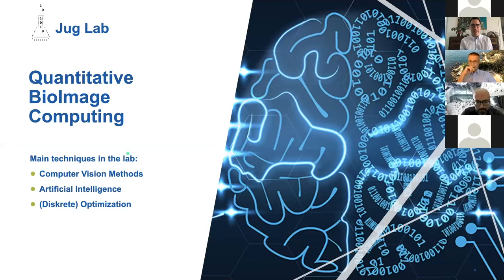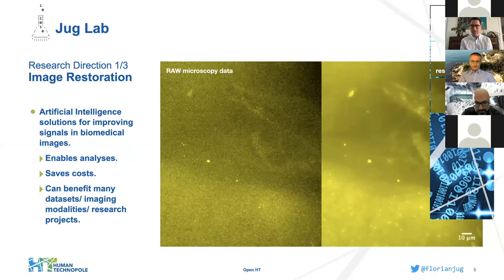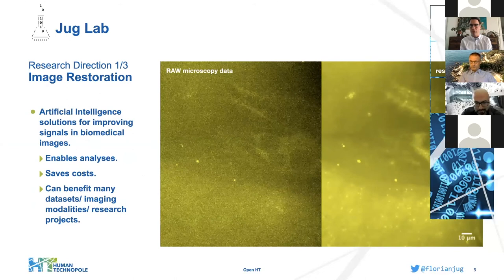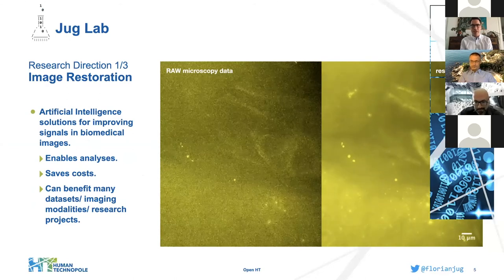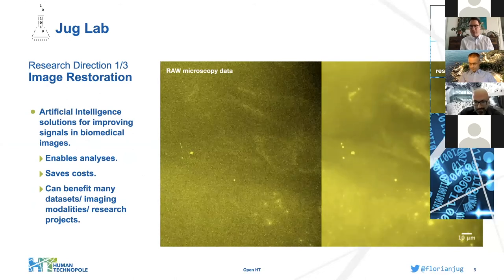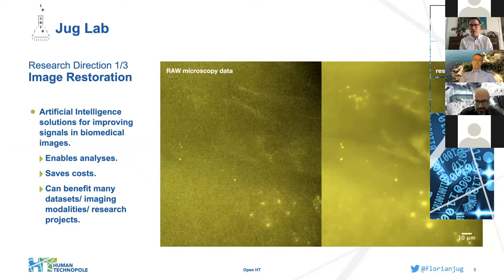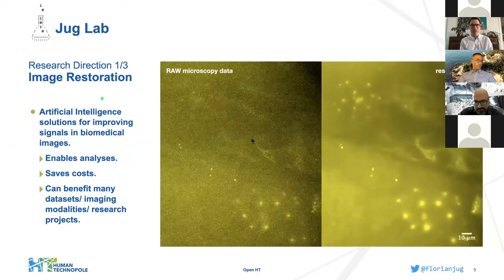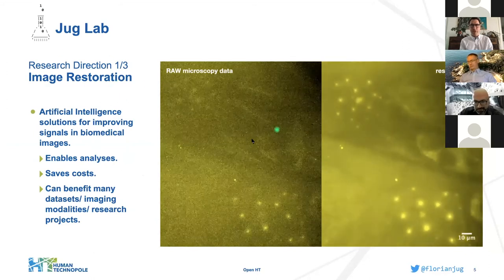It is important to point out that computer vision relies today very much on methods from artificial intelligence, and also from discrete optimization, convex optimization, and optimization in general. We will cover all these aspects. While we are working on a multitude of different projects, I will highlight three representative examples that are also three very pronounced research segments in the lab.